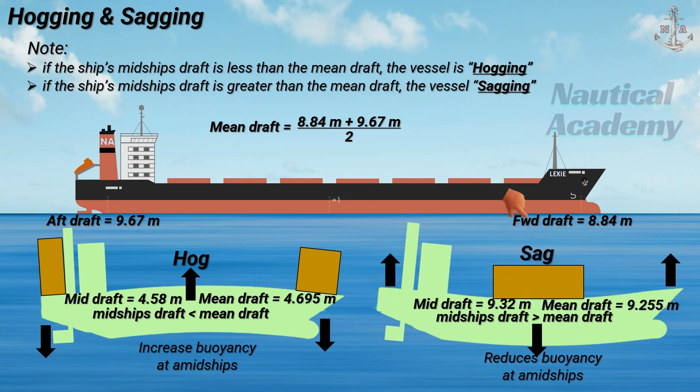If the vessel is hogging or sagging, a correction must be applied to determine the ship's mean draft, known as the mean of mean or quarter mean draft. I made a separate video on how to determine the quarter mean draft if the vessel is hogging or sagging — kindly check the link in the description. That's all for now, I hope you found this video helpful, see you next time, thank you for watching.